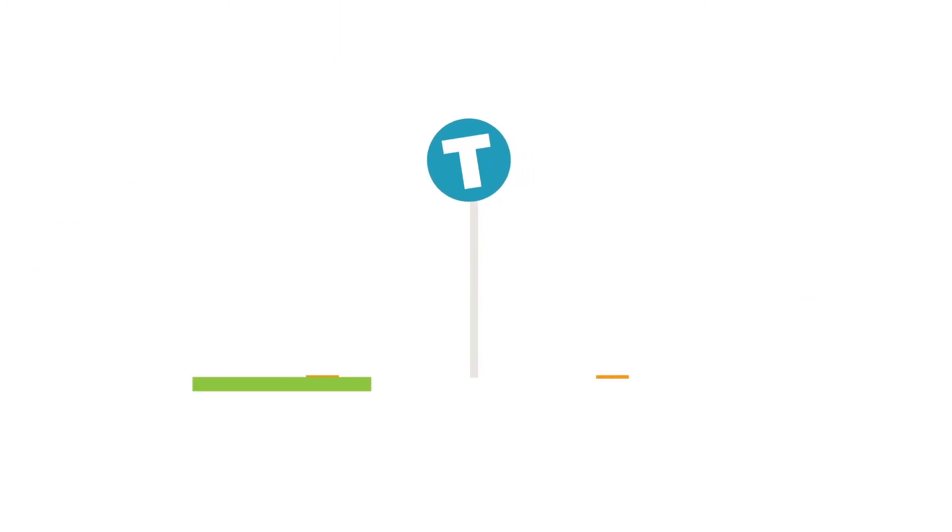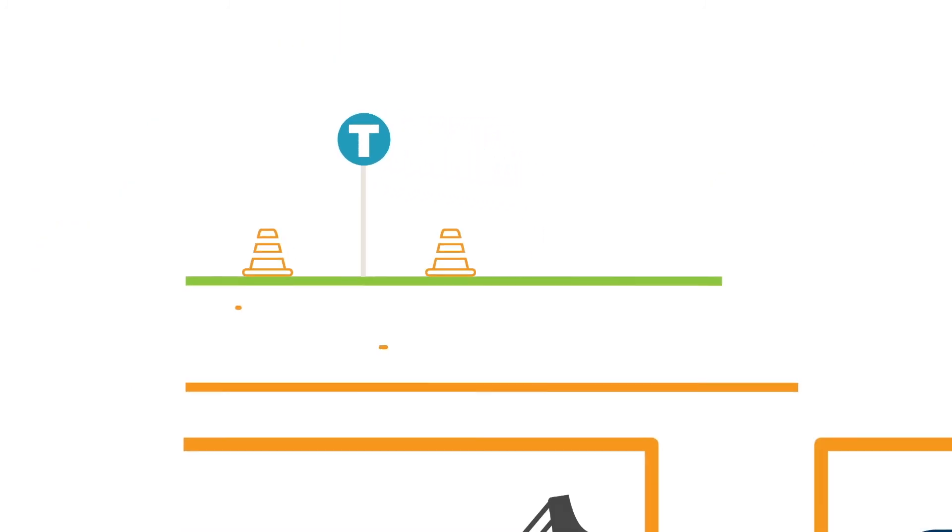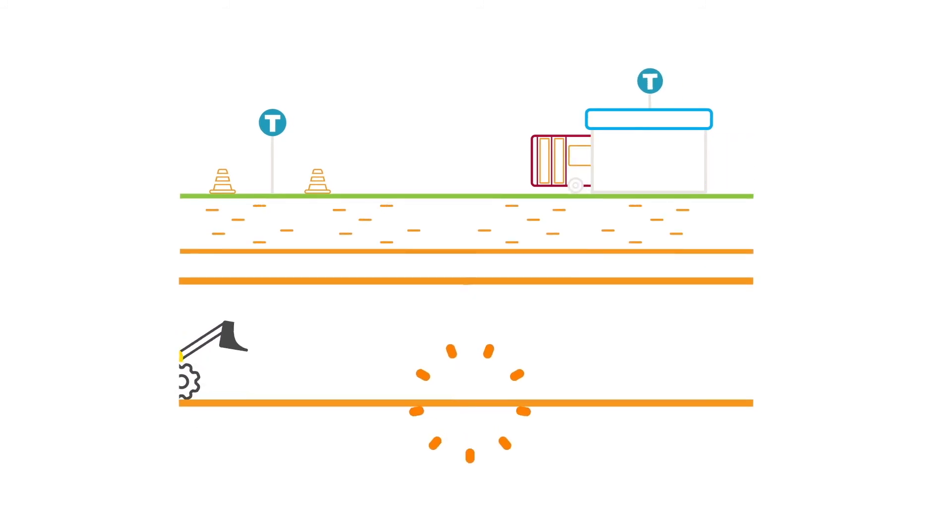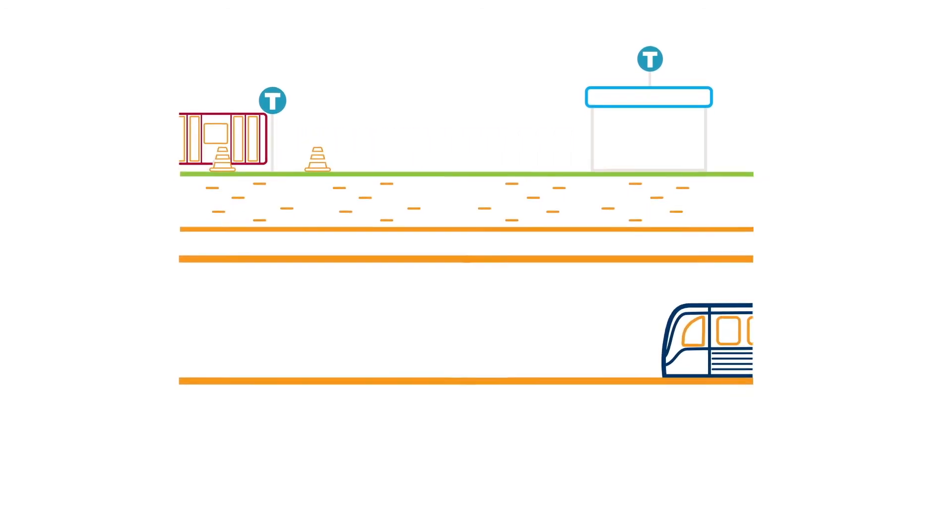The new metro lines will be built almost entirely separately from the existing ones. However, when the time comes to connect the new lines with the old, there will be unavoidable suspensions or reductions in the metro, and a replacement bus service will be provided.